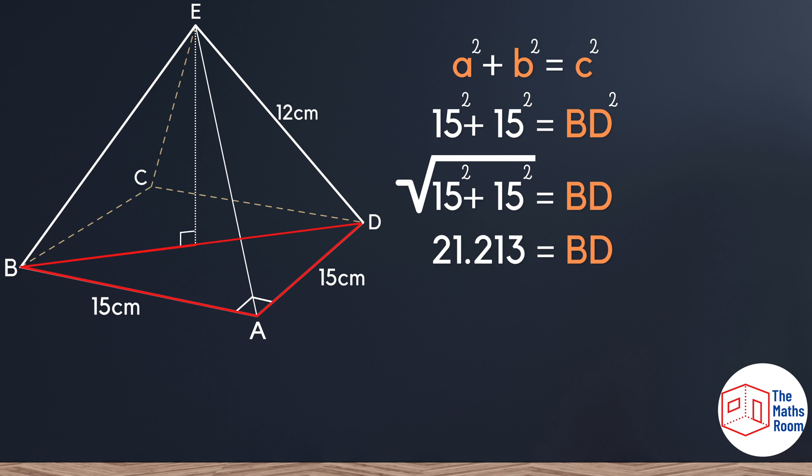Now that we have BD, we can see there are two right-angled triangles above that line with one of their sides joined to it. We're going to use only one of these triangles, which means we'll use half of that BD length. We'll take that and divide it by two, resulting in 10.607.